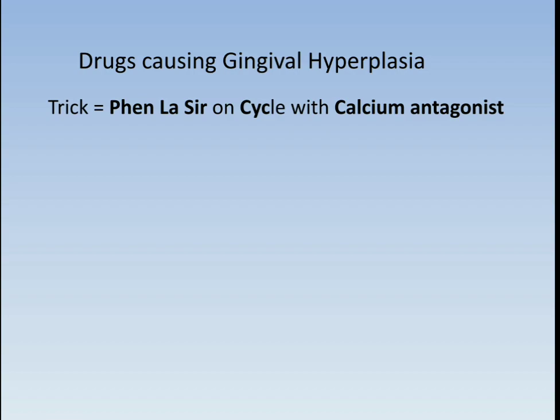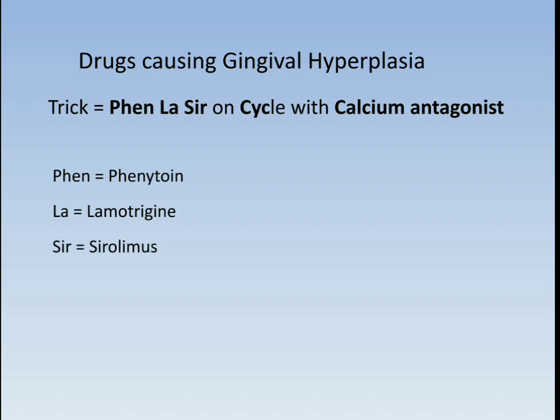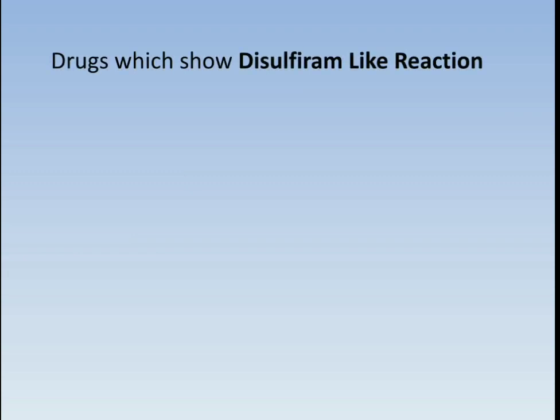Drug causing gingival hyperplasia — the trick is 'Fenla on cycle with calcium antagonist.' Here Fen denotes phenytoin, La denotes lamotrigine, Ser denotes sirolimus, Cycle denotes cyclosporin, and the last is calcium antagonists.